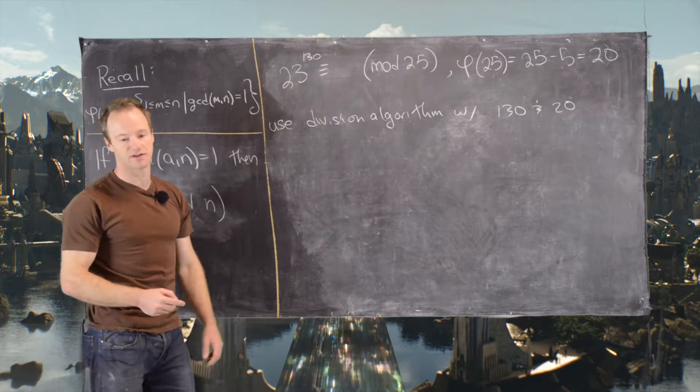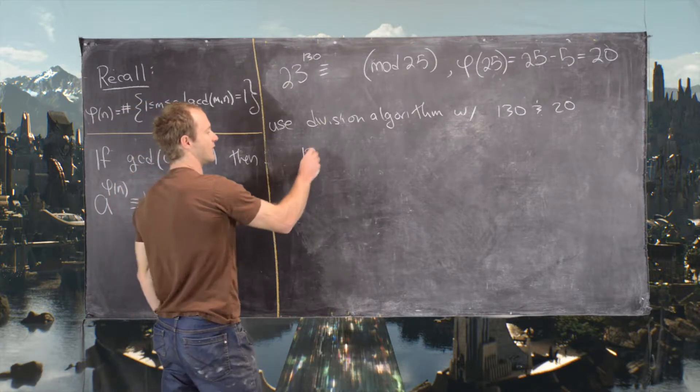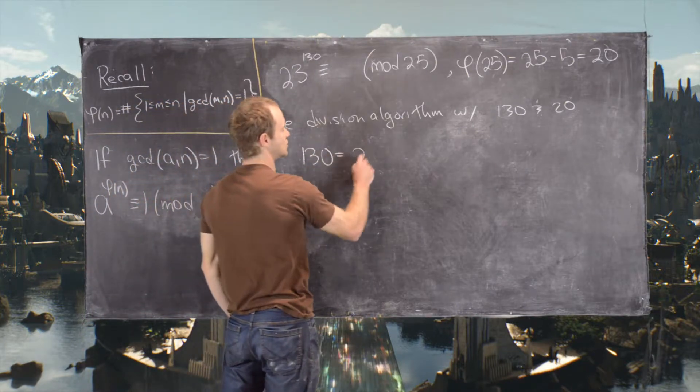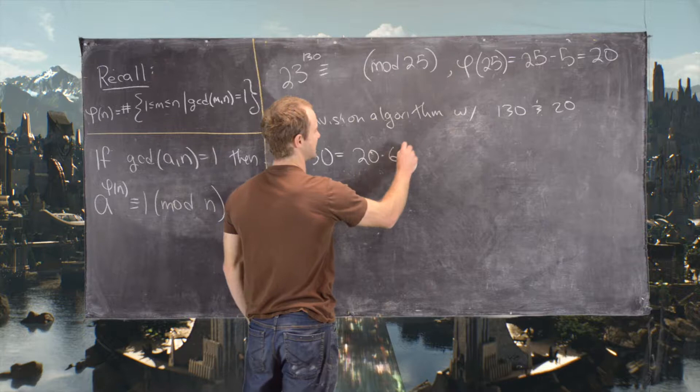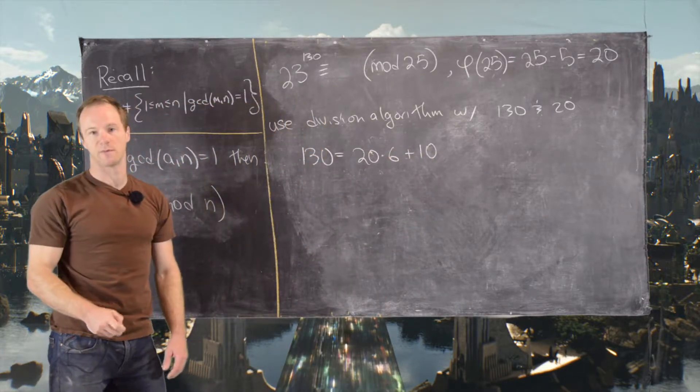So in this case, it's not so hard to see how we would write this via the division algorithm. So we have 130 equals 20 times 6 plus 10. So we have a quotient of 6 and a remainder of 10.